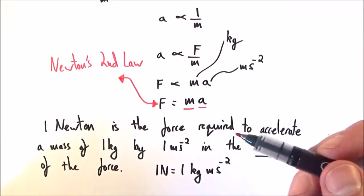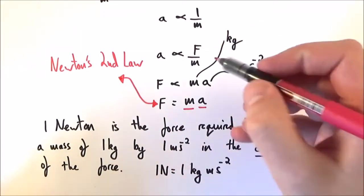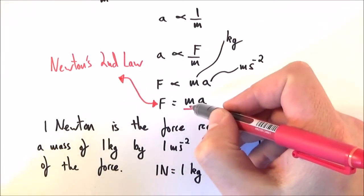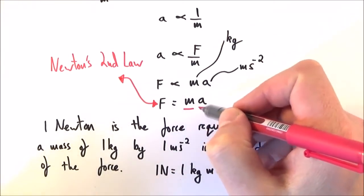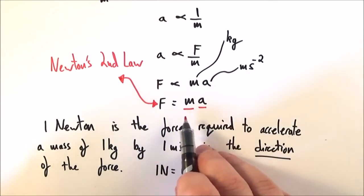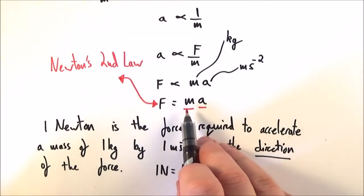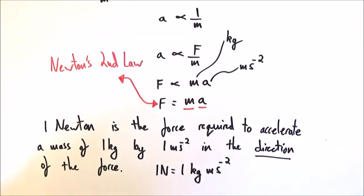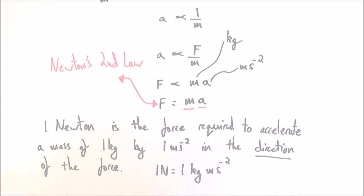Force equals mass times acceleration is a special case of Newton's Second Law. It's special because it only applies when we have a constant mass. It doesn't apply to a space shuttle or a rocket going into space, where as it gets higher and higher it loses mass and therefore the mass is changing. So this form of Newton's Second Law only applies when the mass is constant.